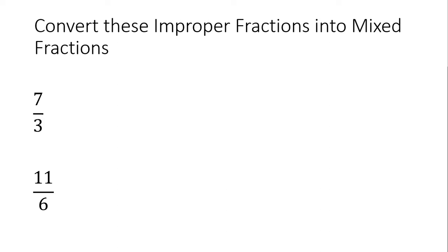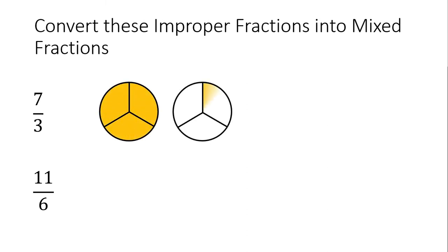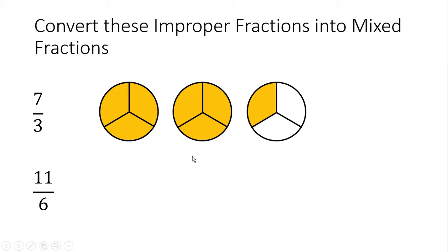Welcome back. Let's see if you got it right. Top question first: 7/3rds. Let's draw it as a picture — keep coloring thirds until we get to 7. One, two, three. Four, five, six. Seven. Now convert to a mixed fraction. How many whole circles? Two. And there's 1 third that's extra. So, 2 and 1/3rd.